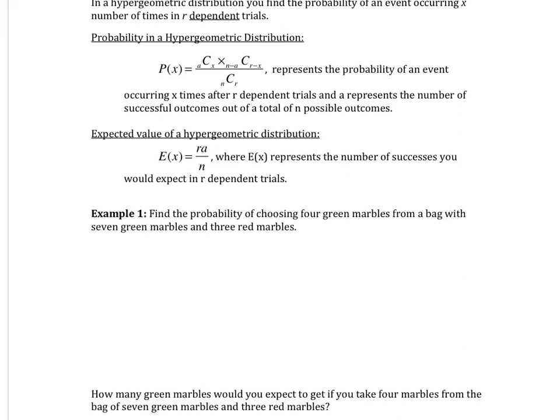So in example one, it says, find the probability of choosing four green marbles from a bag with seven green marbles and three red marbles. So let's list our variables here. So your X is going to be how many times the event is occurring. So we're choosing four green marbles out of the bag.